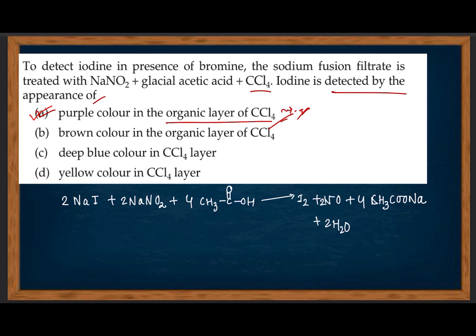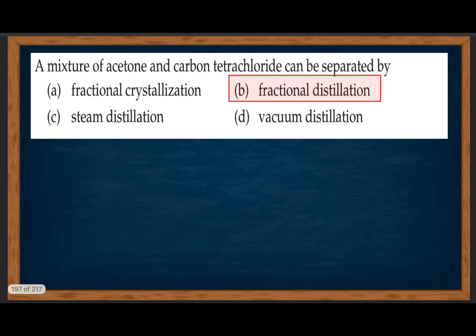A mixture of acetone and carbon tetrachloride can be separated by fractional distillation. Acetone is polar and carbon tetrachloride is non-polar, so fractional distillation is used to separate them.